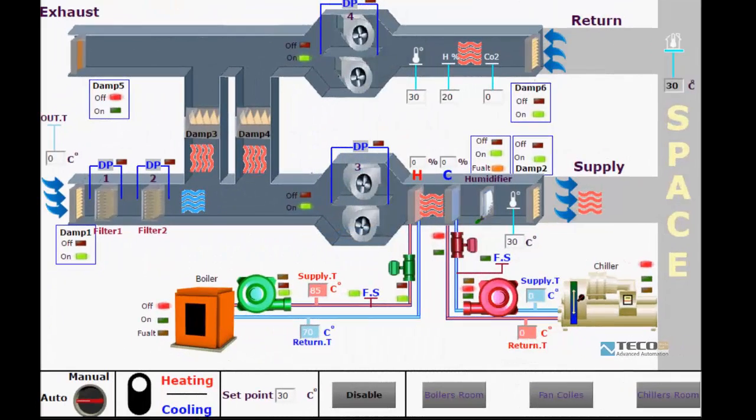Welcome to Teco Middle East programming group. I hope you are doing well. In this video we will talk about HVAC systems. This system contains boilers, chillers, and AHUs. For this system we have two modes: heating and cooling, and we have manual and auto mode.